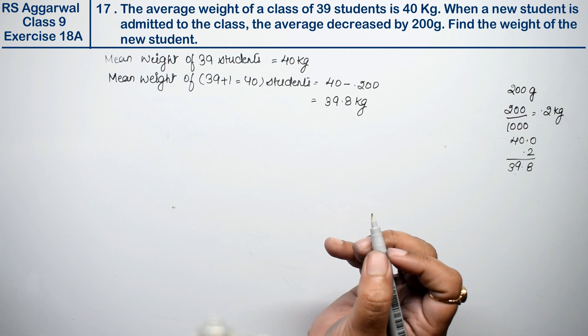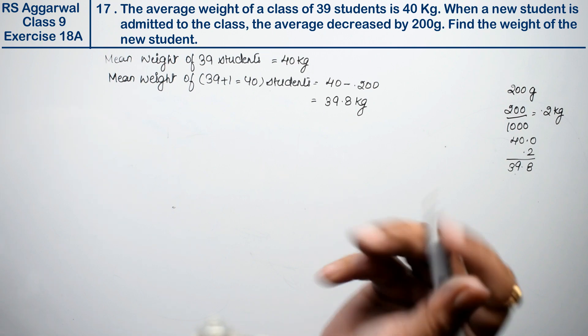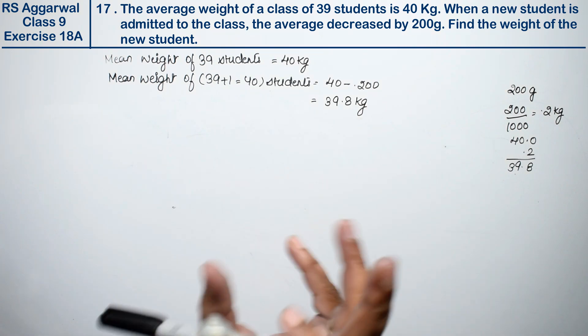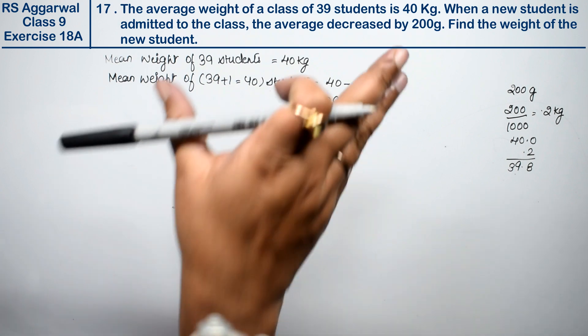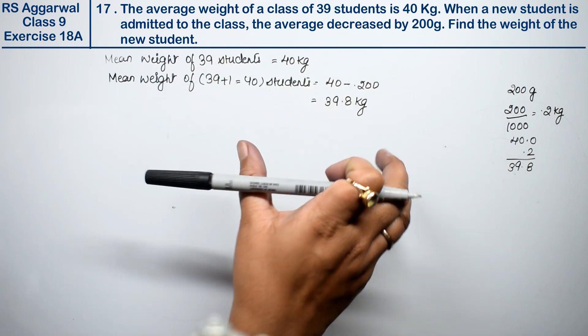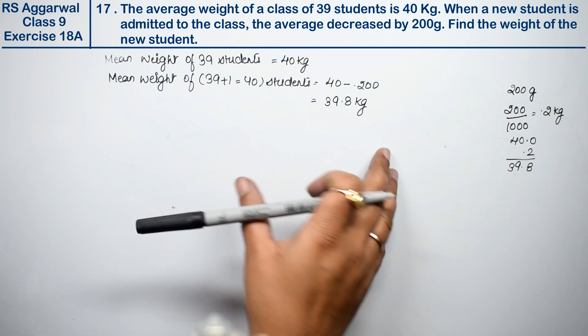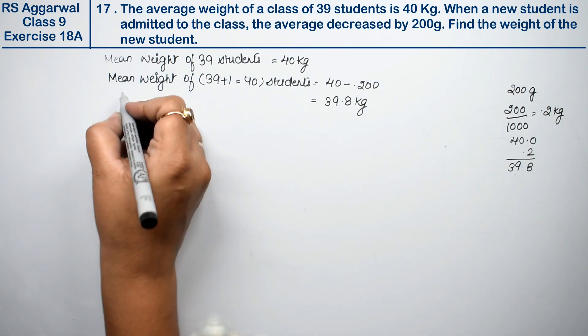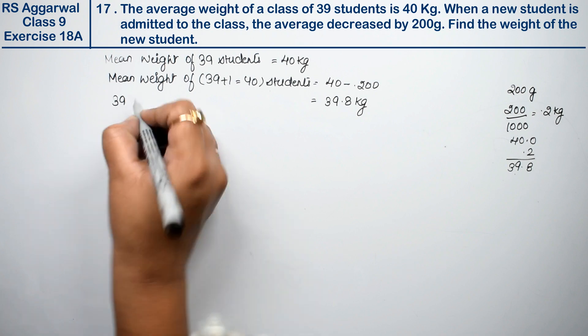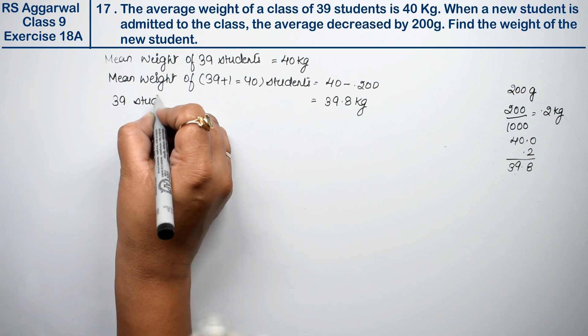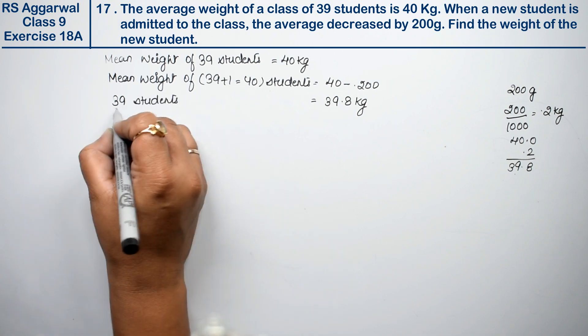Now what do we have to find? We have to find this new student's weight. So how will we do this? The total sum that was there before, and what came now, we will subtract it, and we will get our weight. See here, first we talk about the 39 students.